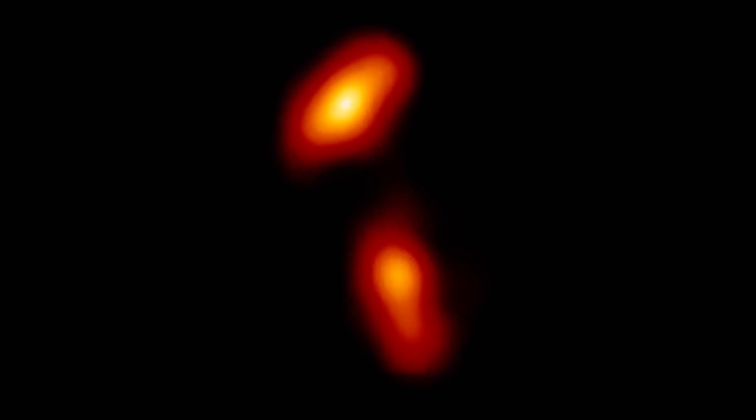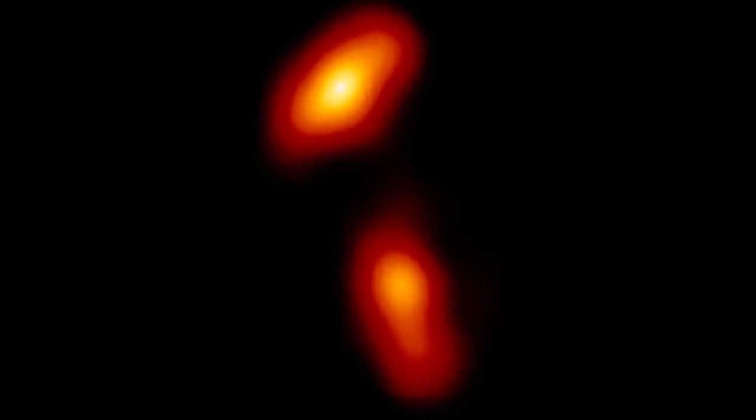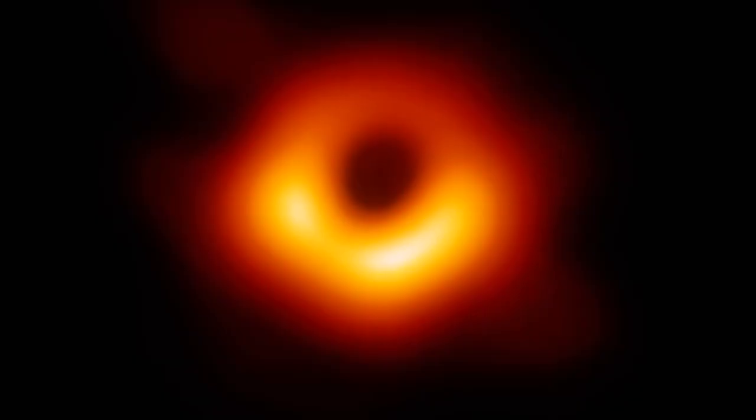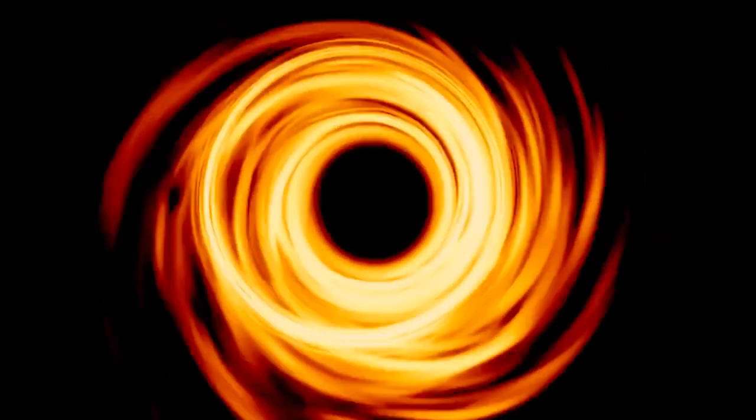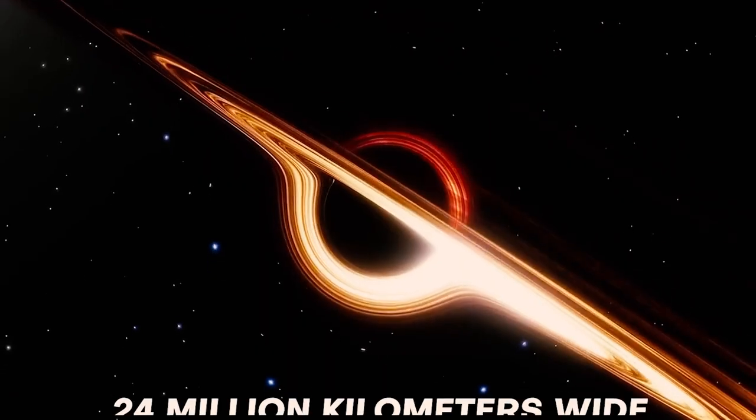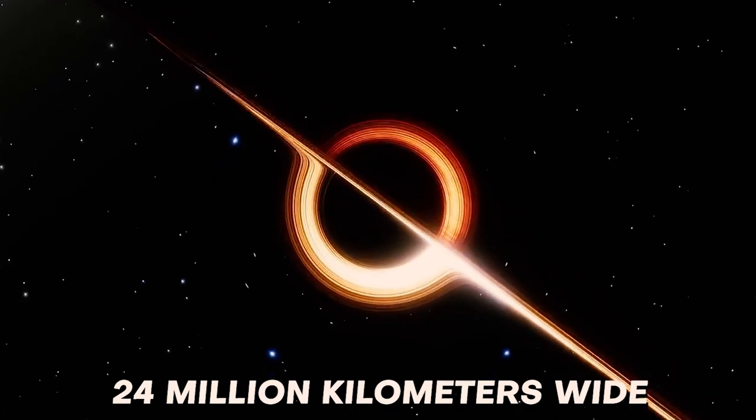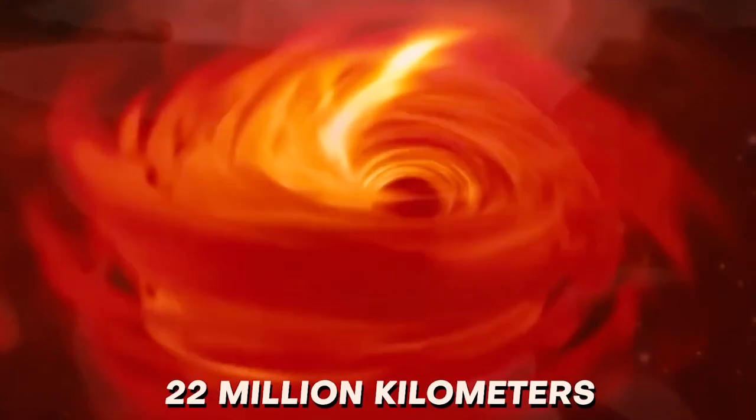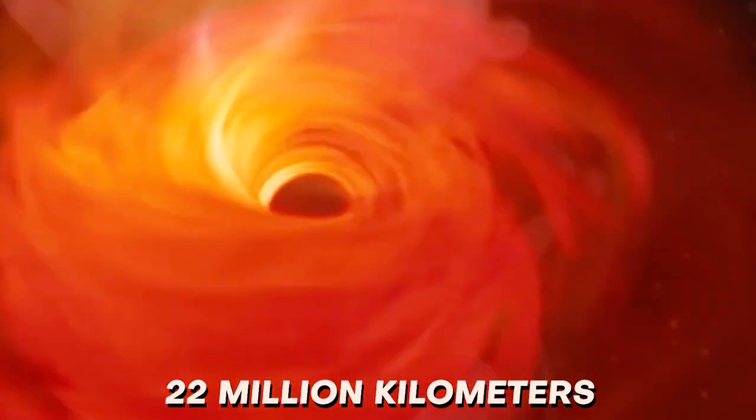Approaching one of them is literally impossible even if we build powerful sophisticated spaceships because around them there is a boundary called the event horizon which once reached, there is no return. And believe it or not, the event horizon of the 24 million kilometers wide Sagittarius A black hole extends more than 22 million kilometers into space all around it.